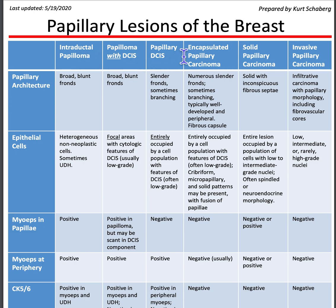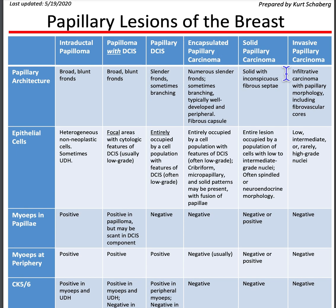To differentiate the six entities of papillary lesions of the breast — intraductal papilloma, papilloma with DCIS, papillary DCIS, encapsulated papillary carcinoma, solid papillary carcinoma, and invasive papillary carcinoma — you want to look at the architecture.